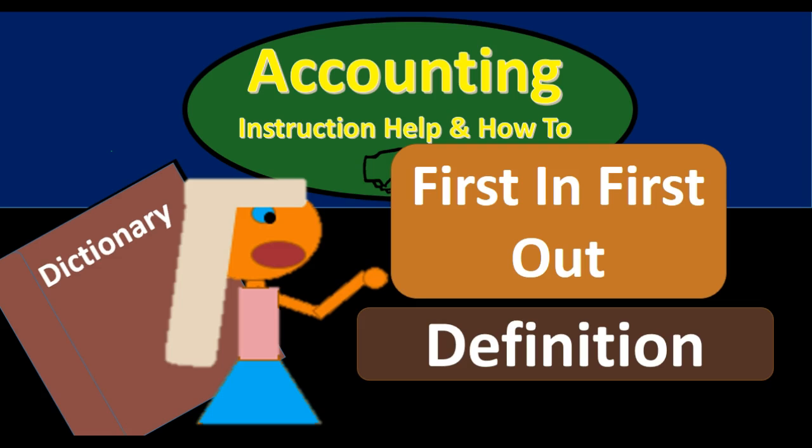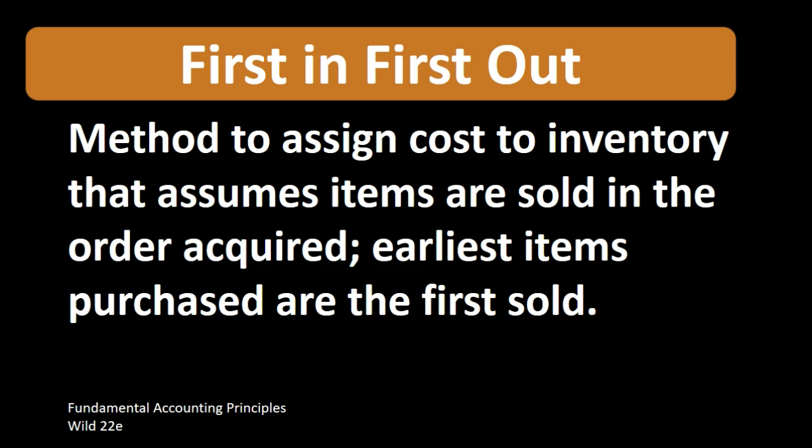Hello. In this lecture we will define first in first out inventory method, also known as FIFO. According to Fundamental Accounting Principles, 22nd edition, the definition of first in first out is: a method to assign cost to inventory that assumes items are sold in the order acquired — earliest items purchased are the first sold.